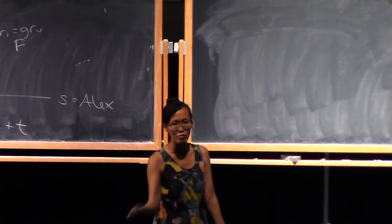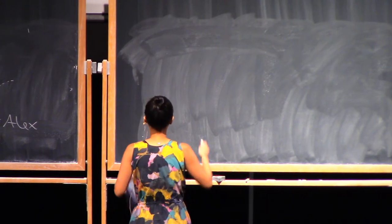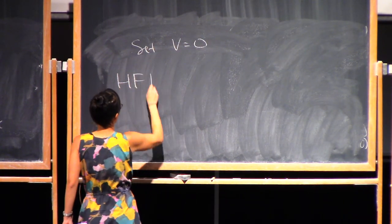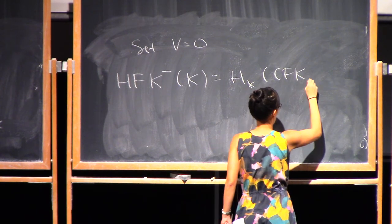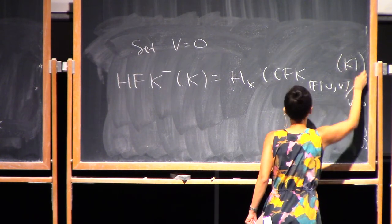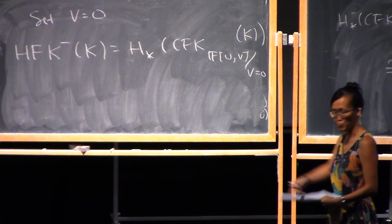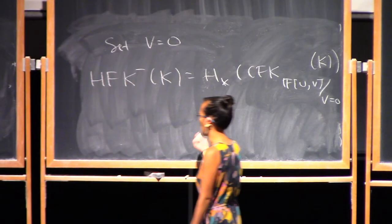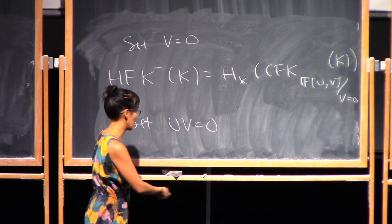So setting U and V both equal to zero gave HFK hat. But you could also set only one of them equal to zero. If you set V equal to zero, that gives the invariant called HFK minus — the homology with V set to zero — which is an F[U]-module. If you were in the learning seminar this morning, Irvin talked about HFK minus. There are other variants as well — for example, in certain settings it's convenient to set the product UV equal to zero.